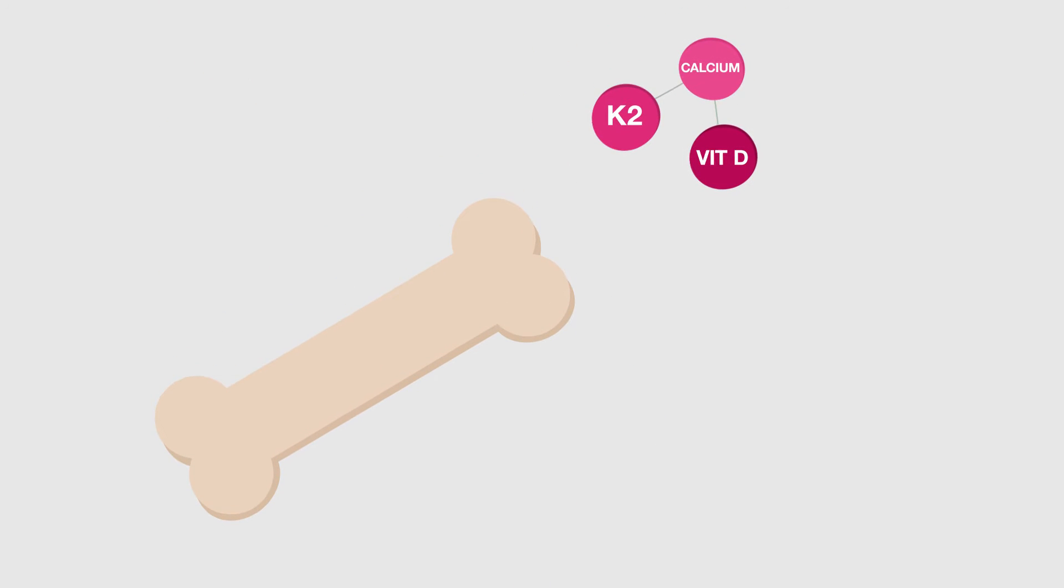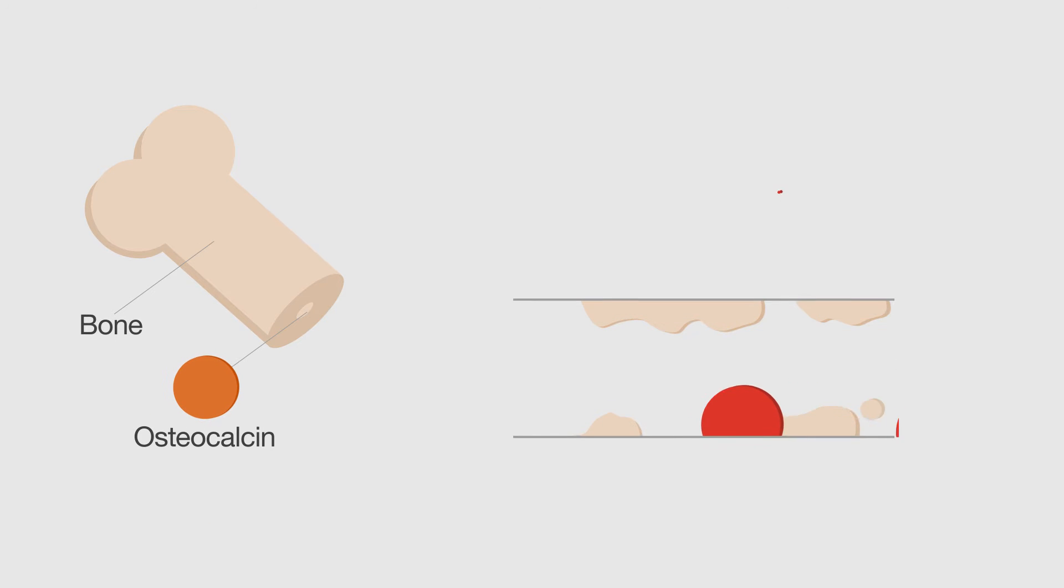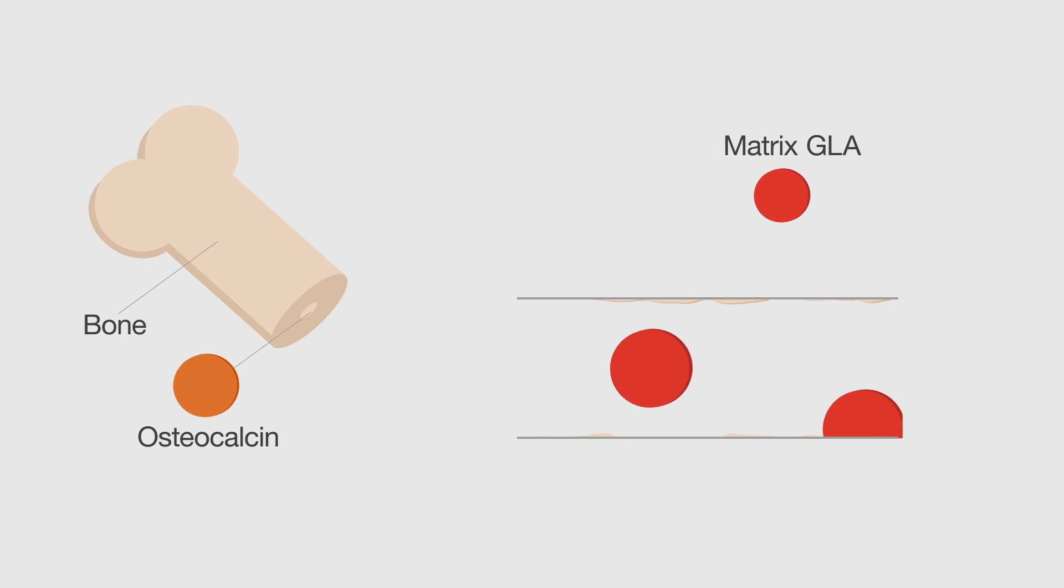Vitamins D and K2 work together to help transport calcium into the bone where it is needed. K2 maintains bone density by activating proteins which regulate calcium absorption into the bone, preventing calcium deposits forming in the arteries, helping to keep your heart and bones healthy.